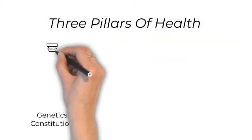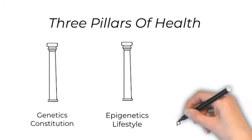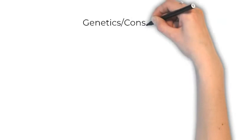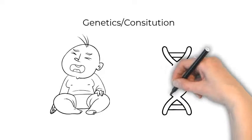There are three pillars that make up your state of health. When any one of them is not optimal, then your healthy state will have weaknesses and make you susceptible to illness. The first pillar is genetics, or what we call your constitution. This is your DNA, or the hand you were dealt by your parents.